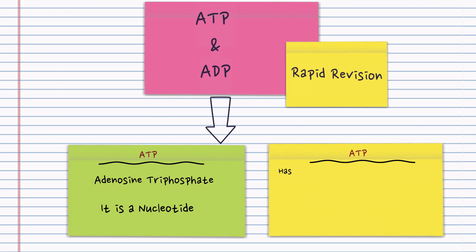In the case of ATP, it has a nitrogen-containing base called adenine. Very important. It has a five-carbon sugar called ribose and it has three phosphate groups.